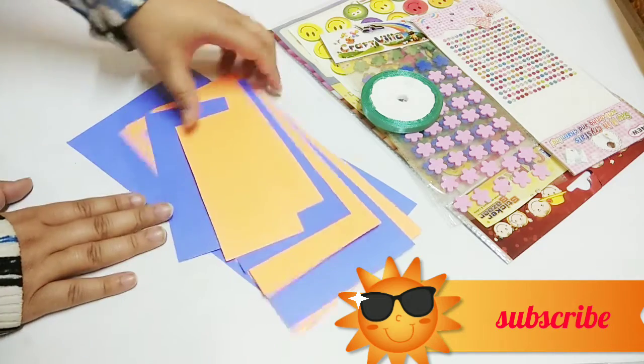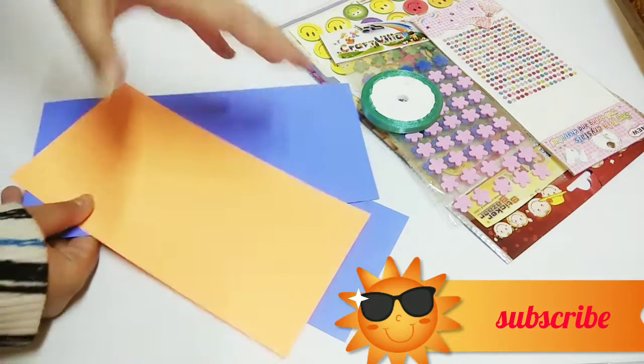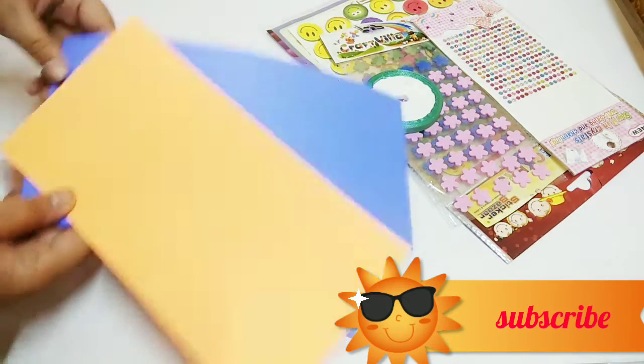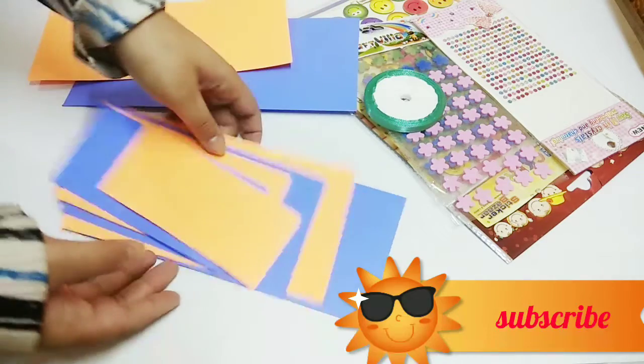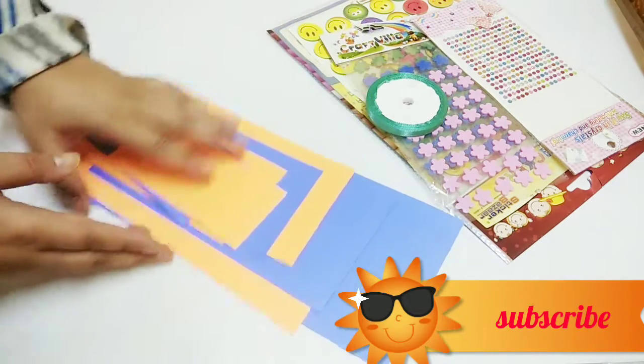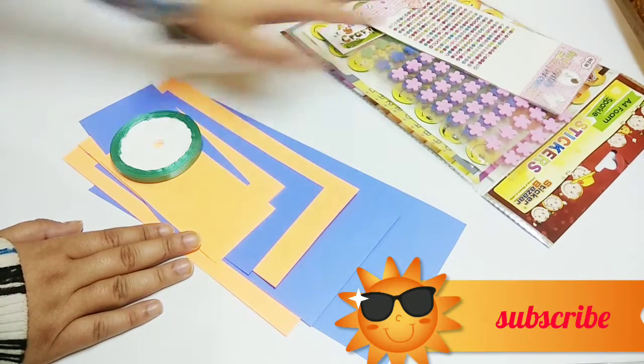First of all you need two color sheets or you can use a single color sheet, you can use scrapbooking paper. I have used simple color sheets, two different color sheets. These are cuttings and measurements and you need some stickers and these things.